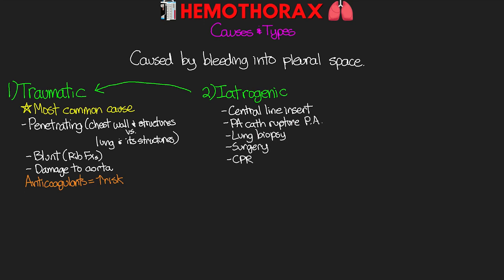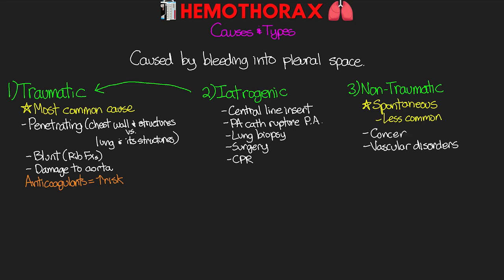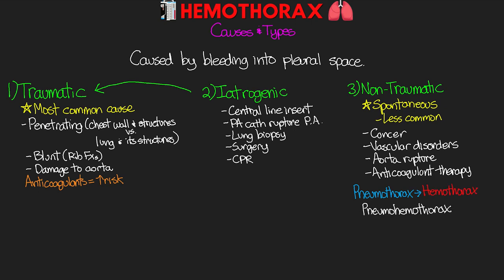The final type is our non-traumatic or spontaneous hemothorax, which is a less common cause. Potential spontaneous causes include cancer, vascular disorders including rupture of the aorta, anticoagulant therapy, and some portion of pneumothoraces can also lead to hemothorax — a combination we refer to as a pneumohemothorax.